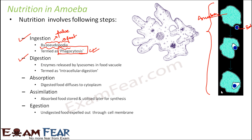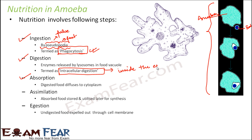Once the food particle enters inside, digestion occurs. There are a lot of enzymes present inside the amoeba which are released from the food vacuoles — you can see these structures inside the amoeba. These digestive enzymes help in breaking down the complex food into simpler forms. This type of digestion is called intracellular digestion, because it takes place inside the cell. The entire body of amoeba is just one cell, so digestion happens inside that one cell.